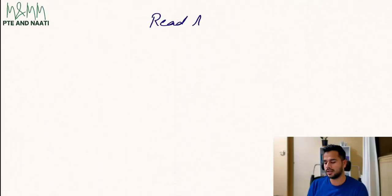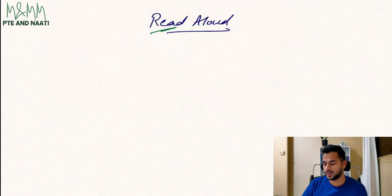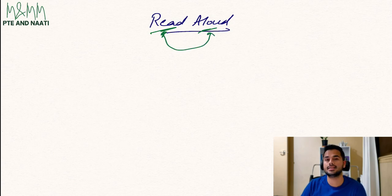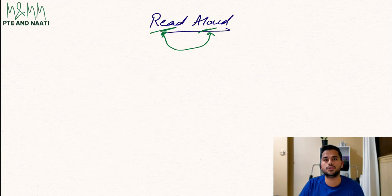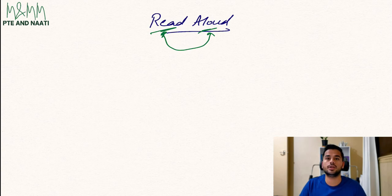Now I will go over to my whiteboard and explain from the very first part. Read Aloud, as the name says, simply means reading something out aloud — loudly. In this task, a small paragraph is given to you on your screen, and the computer expects you to speak out that same paragraph in the exact same manner. We don't have to paraphrase, add any new words, or use any vocabulary of our own. We just speak out whatever is given in front of us.